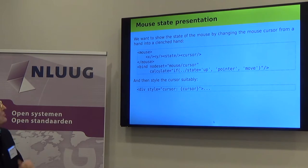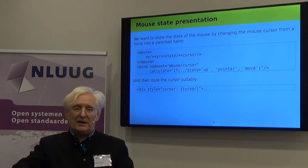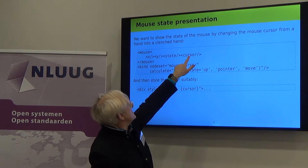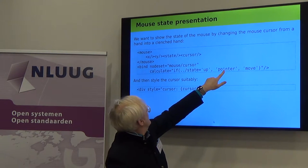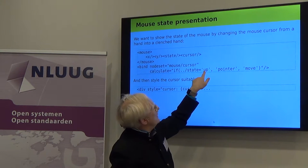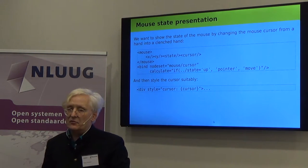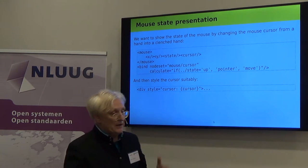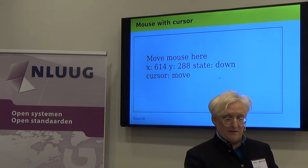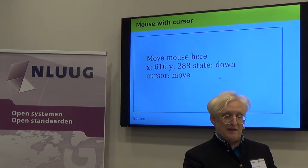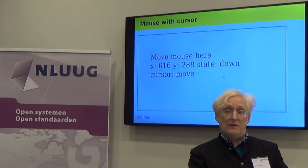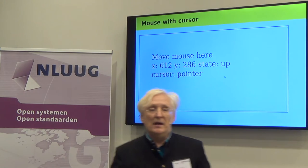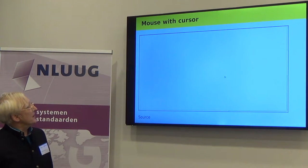Another thing we want to do is change how the mouse cursor looks every time I click on it. What I'm doing is calculating the cursor: whenever the state is up, it's going to be a pointer, and whenever it's down, it's going to be 'move'. Those are the values from CSS. So I just style the cursor on the div, and you can see the mouse is now changing shape as I click. Again, I haven't had to do very much — I just had to say there's a value, and then the system automatically keeps it up to date.